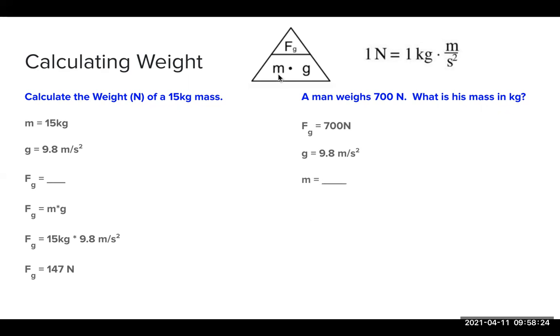If we go up to our triangle, we can cover at mass and we see that it's F_g over G like that. So now we can plug in our variables. We plug in 700 kilogram meters per second. Notice what I did there is I went straight from Newtons and in my problem I put it in kilogram meters per second squared.